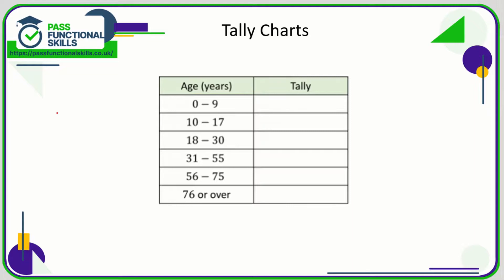Let's take a look at grouped data. First, let's refresh ourselves on tally charts. Let's say I wanted to know the age of everyone who attended a football match, and I was standing at the turnstiles asking each person how old they were — I would probably do a tally chart. The most important thing is that my age categories do not overlap. It's up to me how I set the categories; you might want to do 0 to 20, 21 to 40. The whole point of grouping data is to group it into a manageable number of groups.